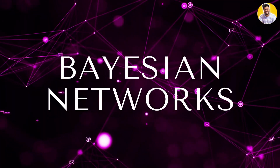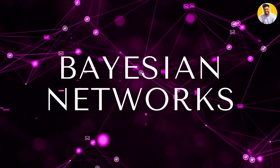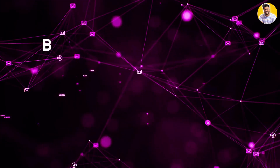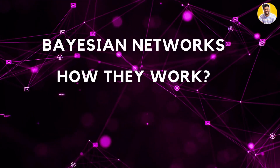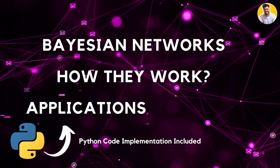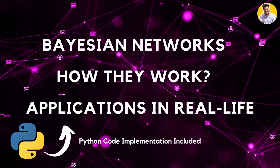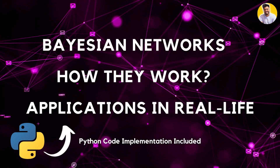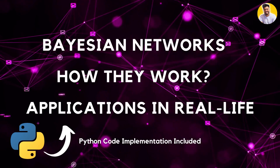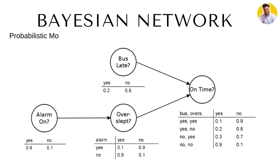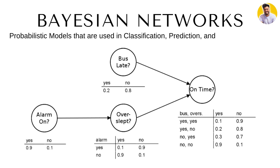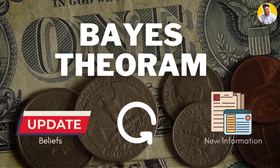Welcome to the world of Bayesian networks — they make explainable AI possible. We'll explore how Bayesian networks work and their applications in real-world scenarios. If you are interested in artificial intelligence, data science, and machine learning, you don't want to miss this video. Bayesian networks are a type of probabilistic graphical model that can be used for a variety of tasks, from predictions and classifications to decision making and diagnosis.